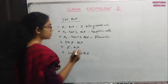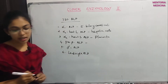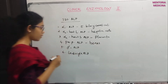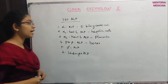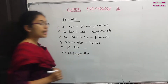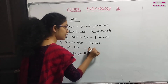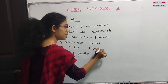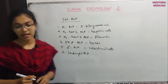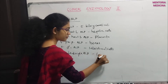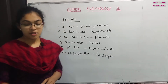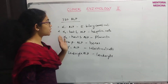Pre-beta alkaline phosphatase is associated with bones. An increased level of pre-beta alkaline phosphatase indicates bone disease. Gamma alkaline phosphatase is associated with intestinal cells. Leukocyte alkaline phosphatase is associated with leukocytes.